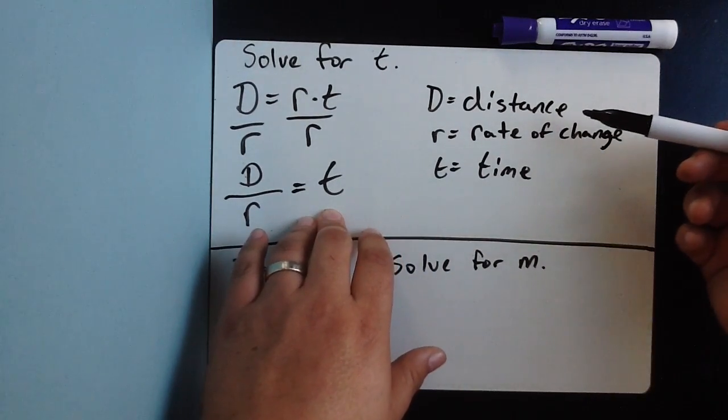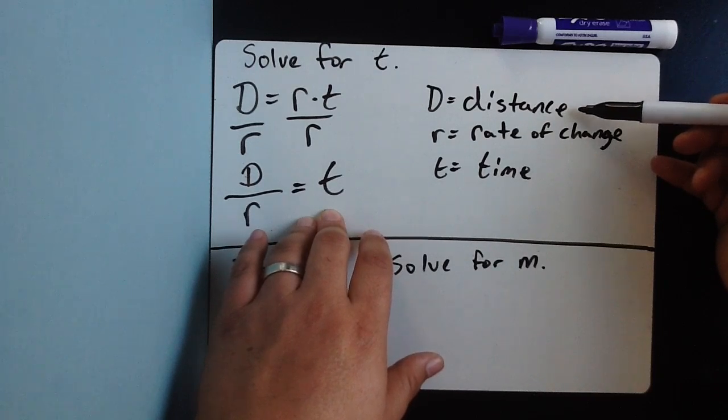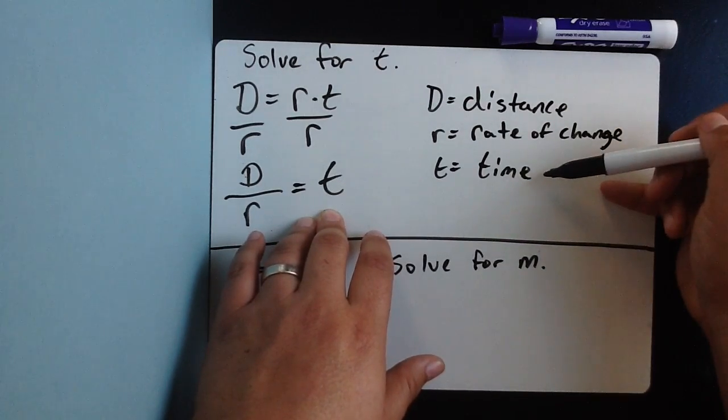Now, why is this important? Well, because they might give us a story where they give us how far you went, how fast you were going, and we want to figure out how long it took you to cover that distance.